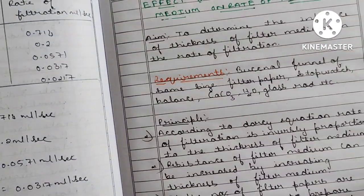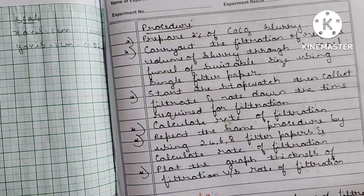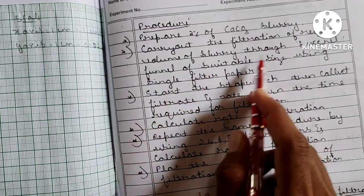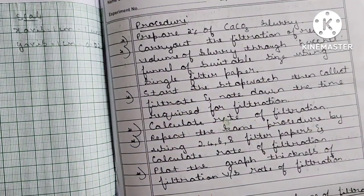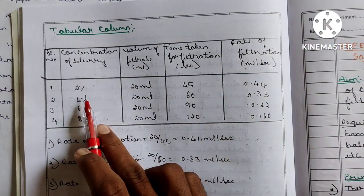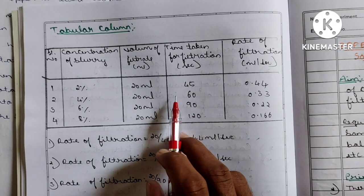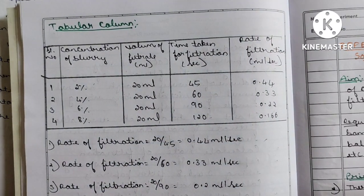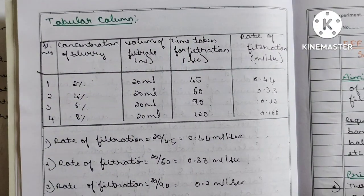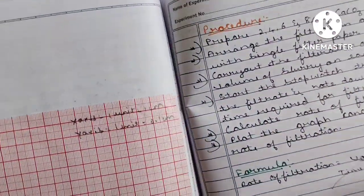Next experiment: effect of thickness. Thickness means adding layers of filter paper. Same procedure — prepare 2% calcium carbonate slurry, carry out filtration, start the stopwatch, and collect 20 ml. Prepare 2%, 4%, 6%, 8% slurry — collect 20 ml each time and record the time. Remember: as the thickness increases, the rate of filtration decreases.